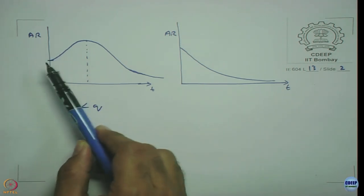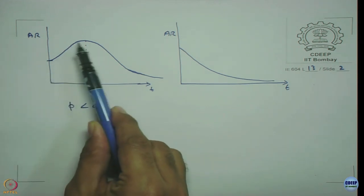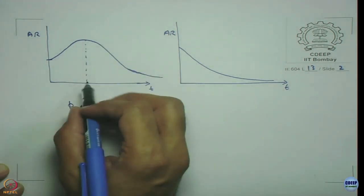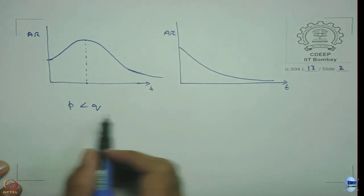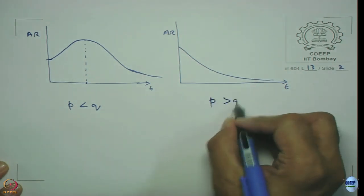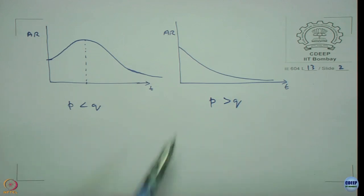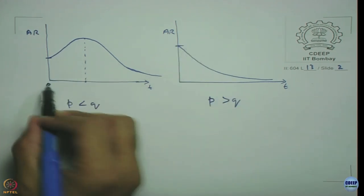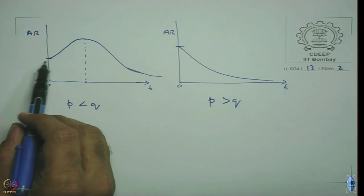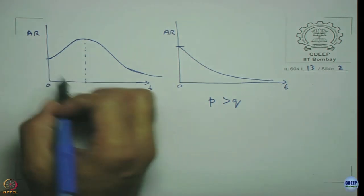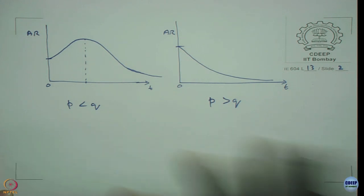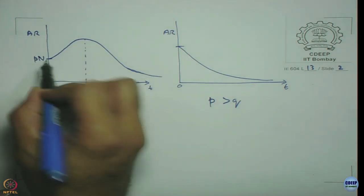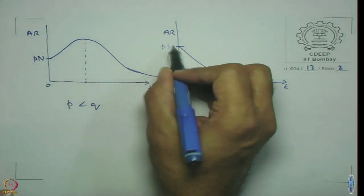When p is less than q, the adoption rate will show an increase and then it will fall with the peak value. While p is greater than q, then you get a simple goal seeking system. What will be the y intercept? Initially the total population are all potential adopters. The y intercept is nothing but p times n. Here also it is p times n.